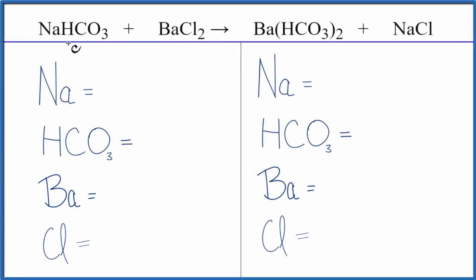To balance this equation, NaHCO3 plus BaCl2, let's count the atoms up. We have one sodium atom and then I have this HCO3 here. This is called the bicarbonate ion.